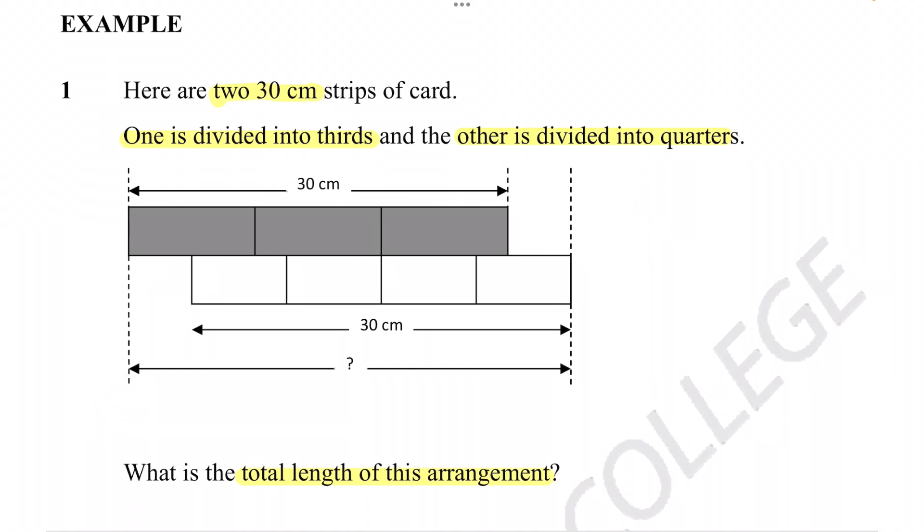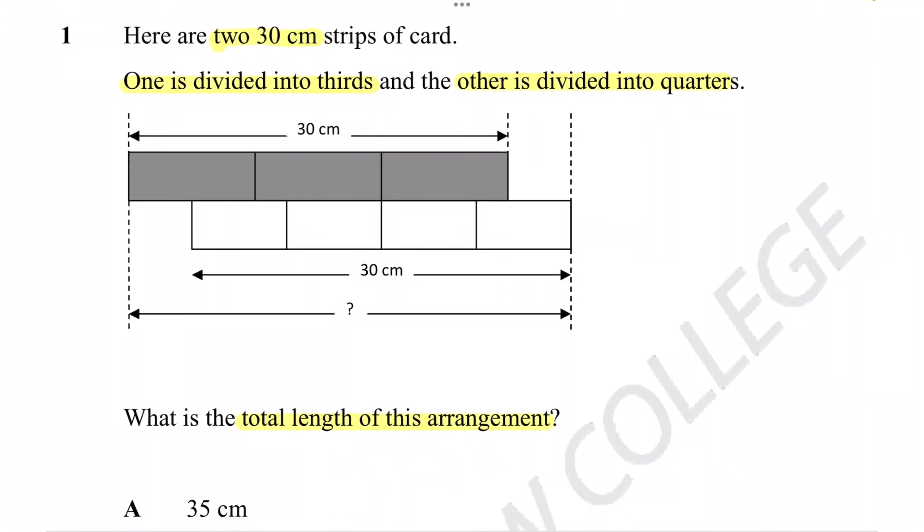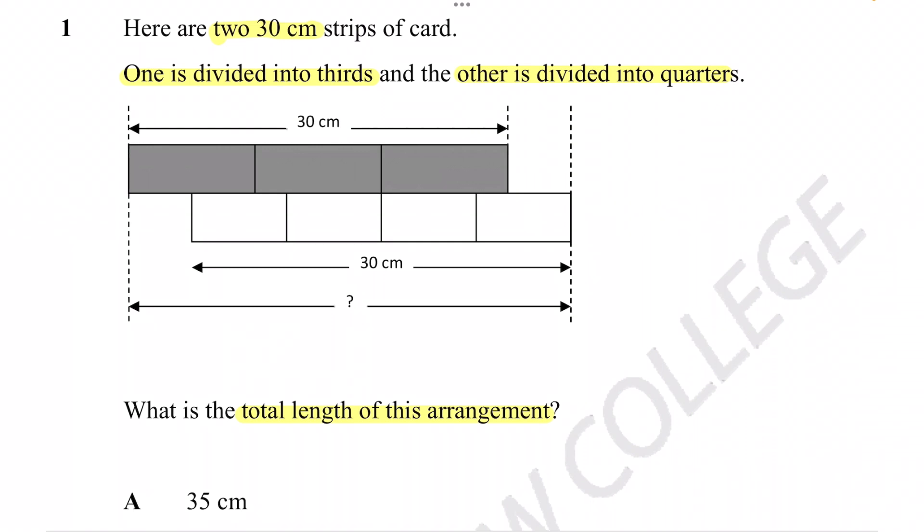Thankfully they've given us a diagram representation of this question and that would be one of the things that we want to do as well. If the question doesn't specifically give you a diagram you should always draw a diagram with all the important information because it's just so much easier to see all the information if you can see a diagram or a picture. They always say a picture is worth a thousand words and that definitely holds true in questions like these.